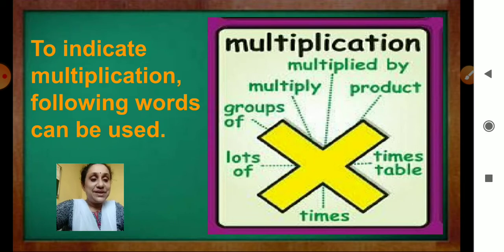And you can see, the sign of multiplication, it is x. And after multiplying two numbers, the answer you get is called the product.